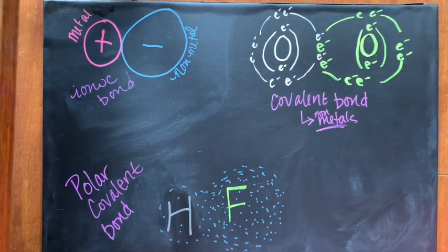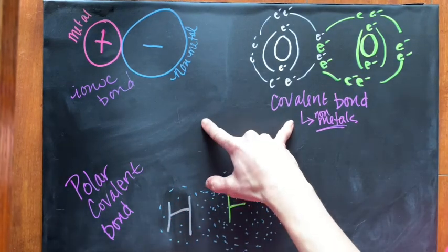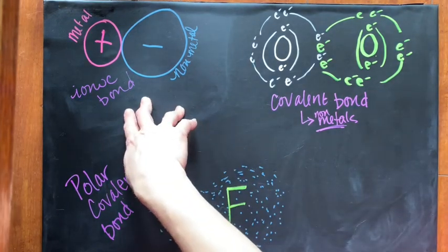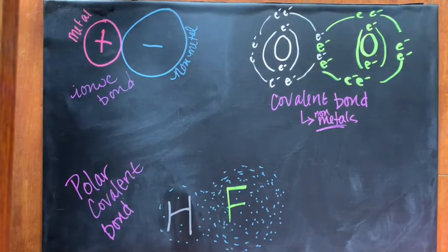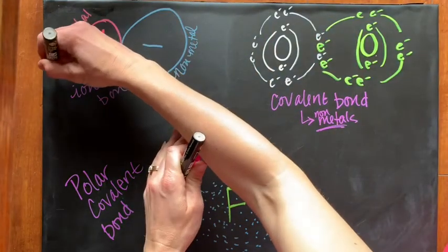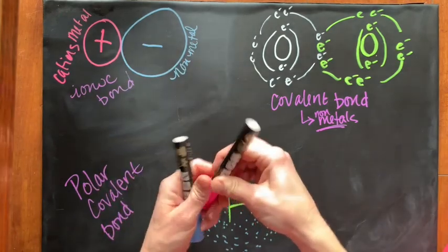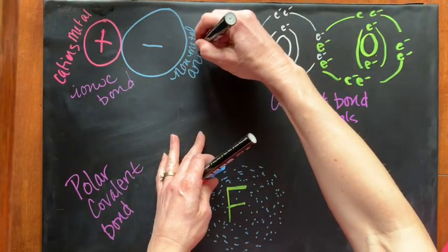In the last video I explained the difference between an ionic bond and a covalent bond. We know from everything we've done in chemistry so far that ionic bonds form between metals and non-metals. Metals form positive ions known as cations, and non-metals form negative ions known as anions.